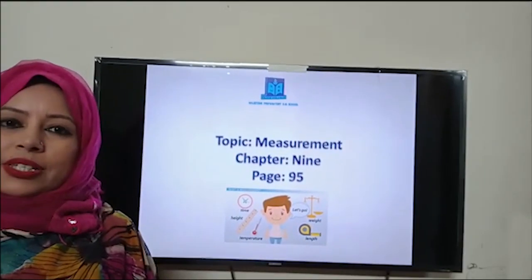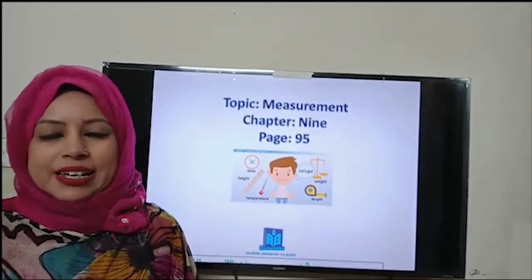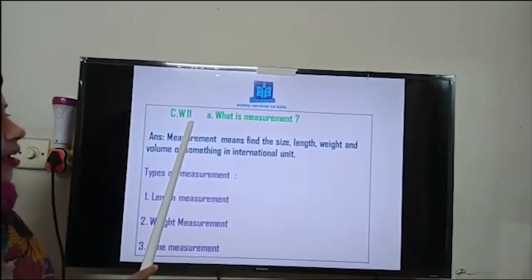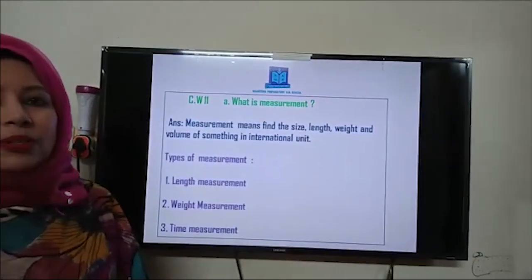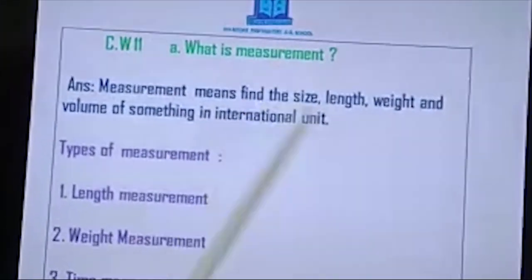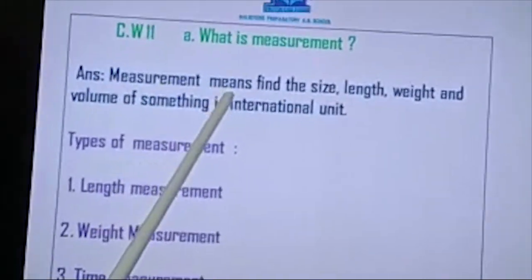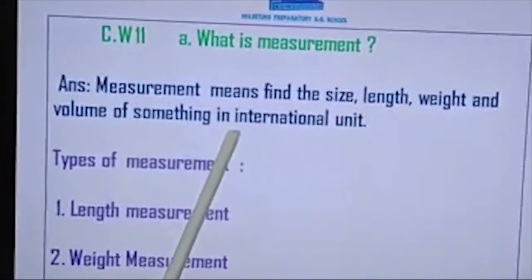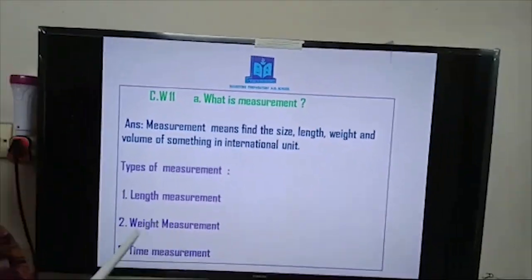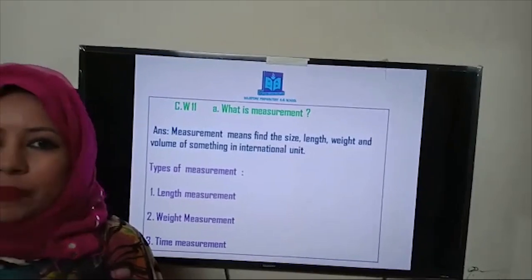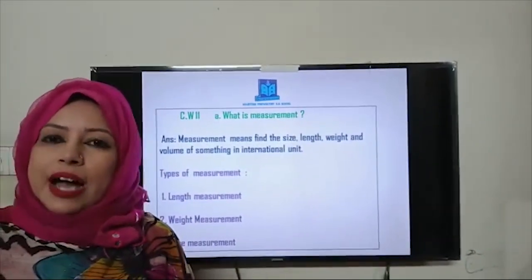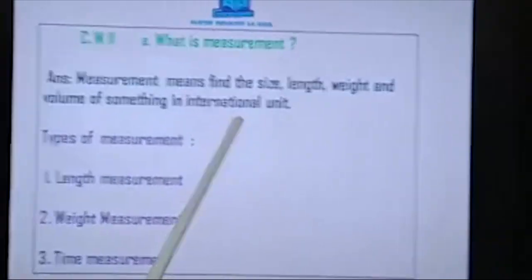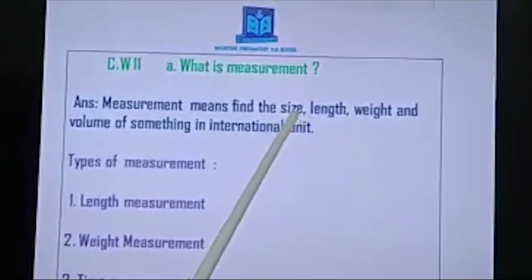First, I want to discuss the basic things of measurement. Today our CW number will be 11, and first of all I want to discuss what is measurement. The answer: measurement means finding the size, length, weight, and volume of something in international units.